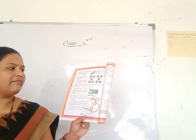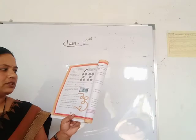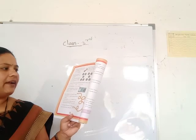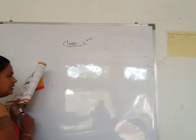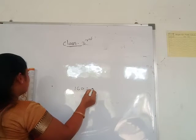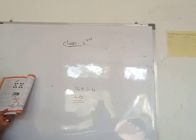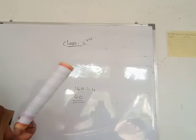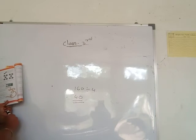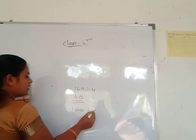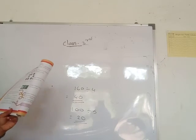If there are sixteen ten-rupee coins and four friends to share them, each friend gets four coins. Five friends found one hundred rupees. If they share equally, each friend gets twenty rupees. Twenty times five is one hundred.